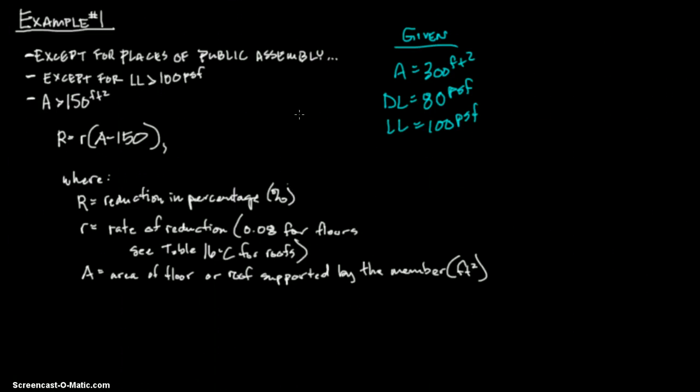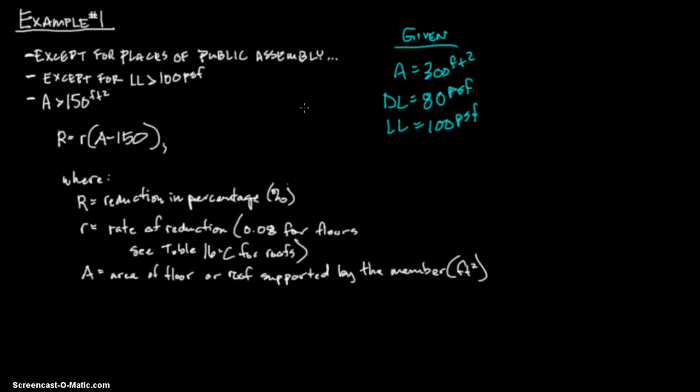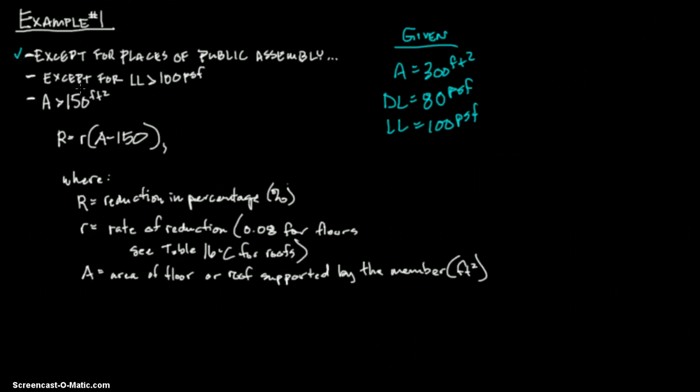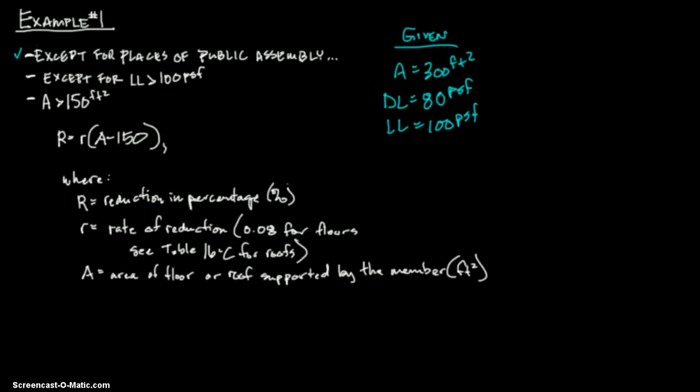Now we need to use this criteria. If you go above and to the left, you'll see it starts on the last paragraph in the left column. It says floors in the building where partitions are subject to change must be designed to support 20 pounds per square foot in addition to all other loads, except for places of public assembly and except for live loads greater than 100 pounds per square foot. Is this a place of public assembly? No. Is the live load greater than 100 PSF? No, it is equal to 100, not greater.